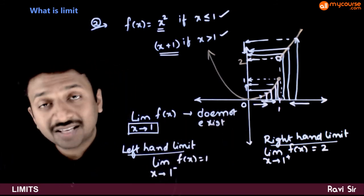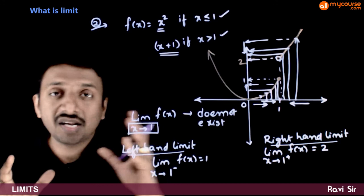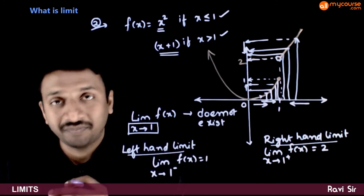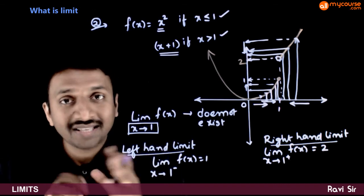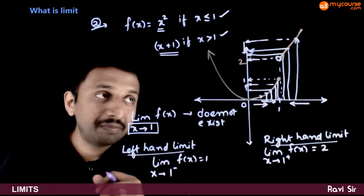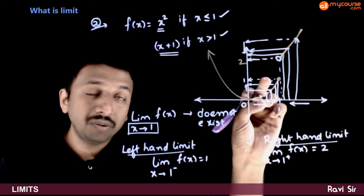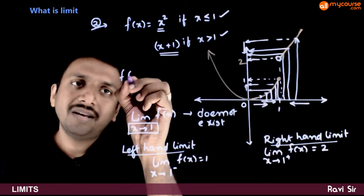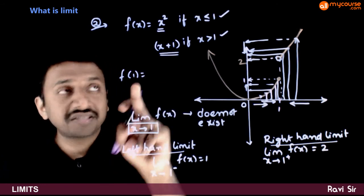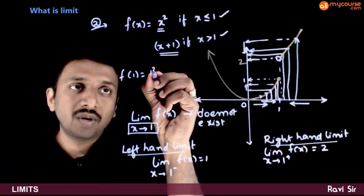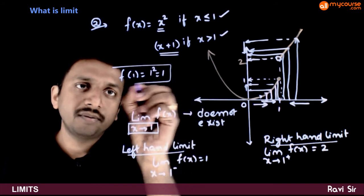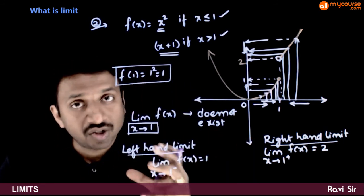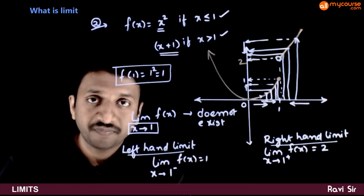For a limit to exist, both the right hand limit and the left hand limit must be exactly the same. This is one example where the limit does not exist, but the functional value at x equal to 1 does exist. The functional value f(1) equals 1 square which is equal to 1. But since the right hand limit and the left hand limit are not the same, the limit does not exist at x equal to 1.